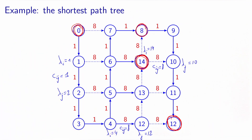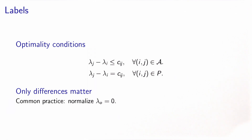The shortest path tree is a spanning tree of the network such that each path in the tree is a shortest path. As discussed for the transshipment problem, the optimality conditions involve the labels only as a difference, so only the differences of the labels matter. Therefore, it is common practice to normalize one of them — typically we set lambda_O, the label at the origin, to 0. The reason is that we interpret the labels as a distance traveled within the network, like a counter, and we initialize that counter to 0 at the origin.